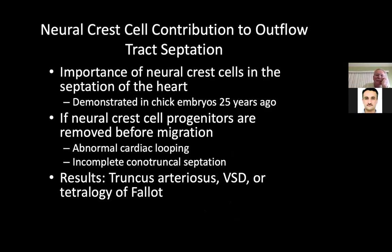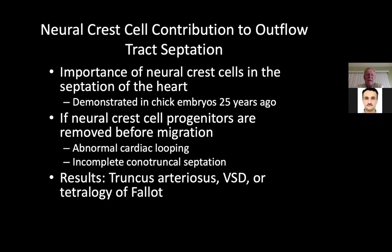The neural crest cells' contribution to outflow tract septation: there's a critical importance of neural crest cells in septation of the heart, demonstrated in the chicken model 25 years ago. If the neural crest cell progenitors are removed before migration, you have abnormal cardiac looping and incomplete conal truncal septation. If this doesn't work well, we get truncus arteriosus, VSD, tetralogy of Fallot, or double outlet right ventricle.